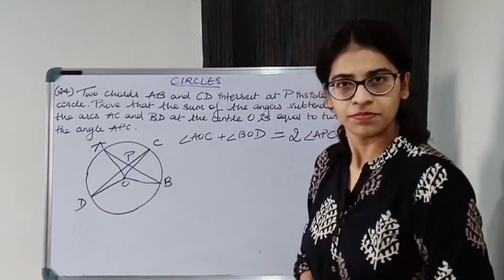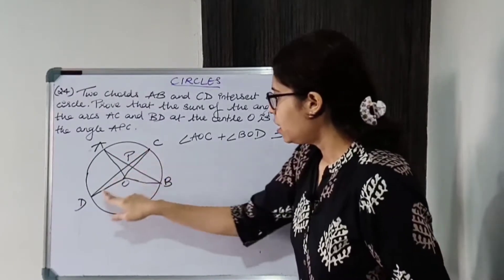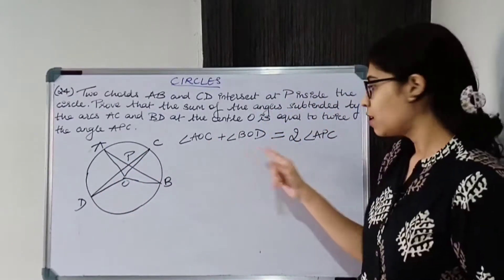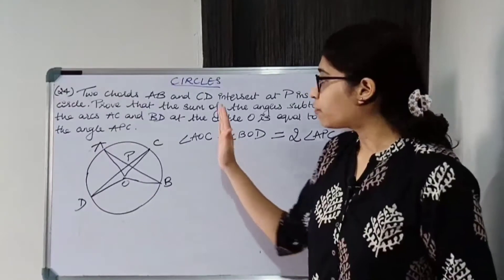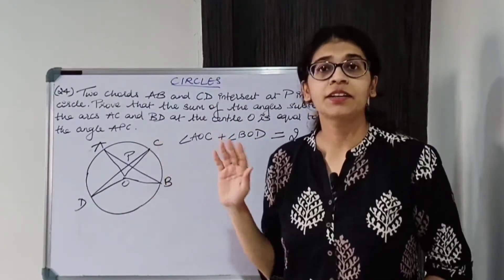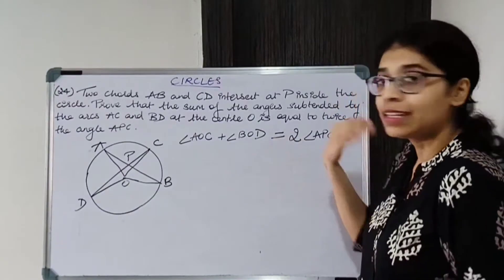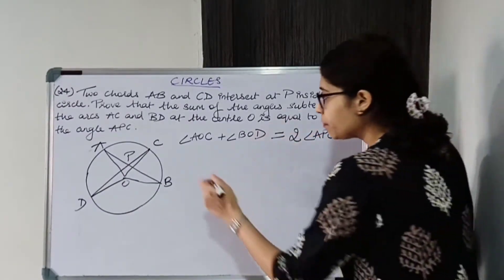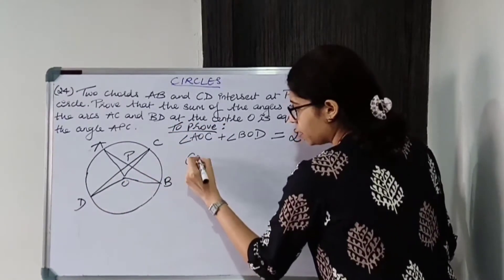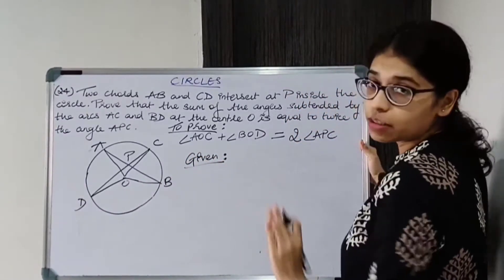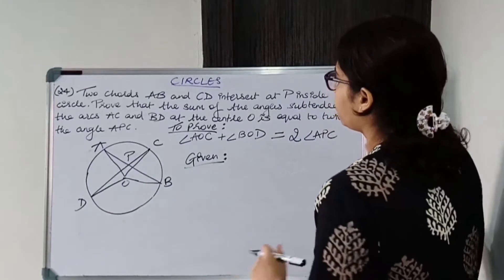Angle APC is this one. It looks complicated but it is not so complicated. AOC and BOD — their sum is equal to twice angle APC. This is what we have to prove. Here you have to write down the given, to prove, and the diagram. Everything you have to figure out from the question. If your diagram is correct, then given and to prove will automatically be correct.